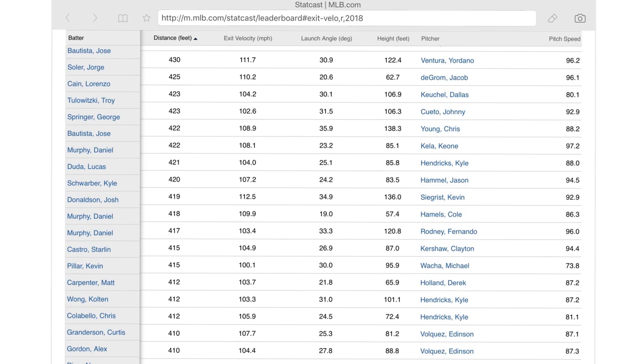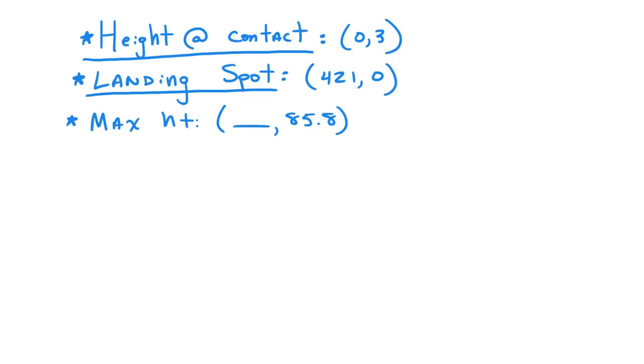This is important because we're going to be using these figures, the 421, the 85.8, and some given knowledge - we're saying that everyone's hitting the ball from three feet off the ground. We're going to be using all three of those to help us come up with a function that should model the path of Daniel Murphy's home run ball.